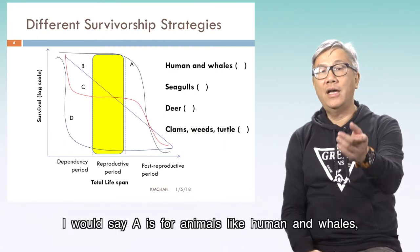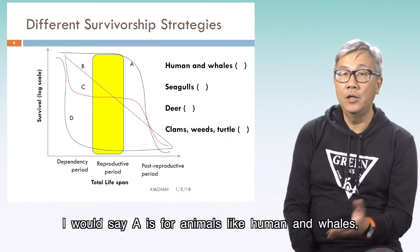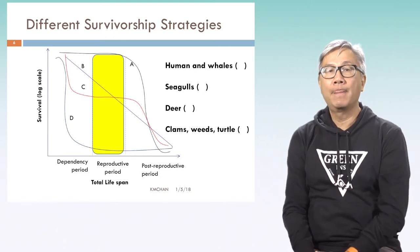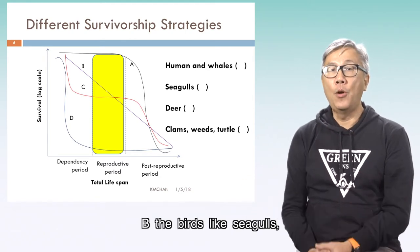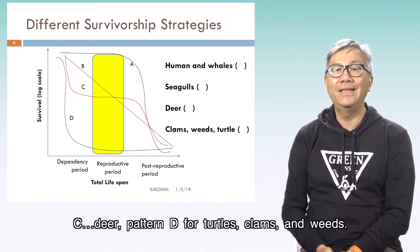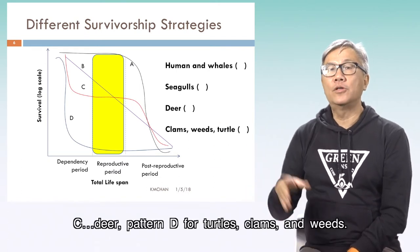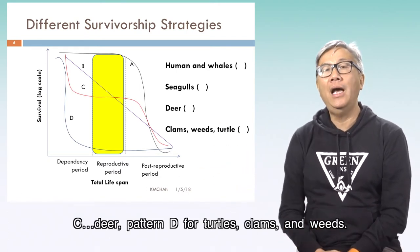Pattern A is for animals like humans and whales. B for birds like seagulls. C for deer. And pattern D for turtles, clams, and whales.